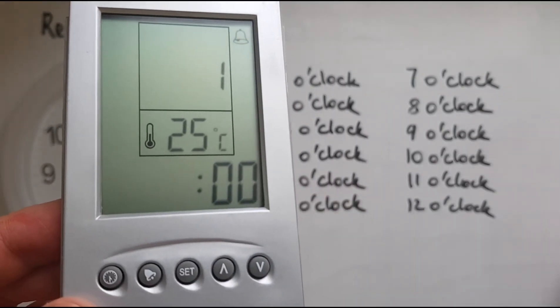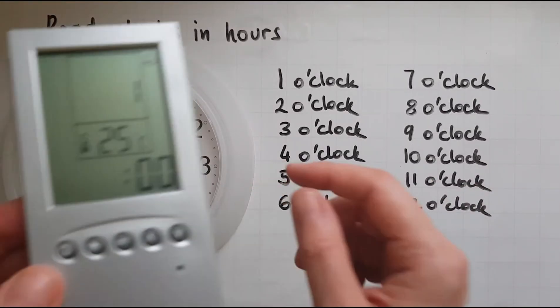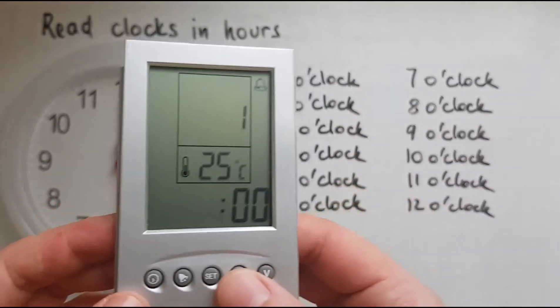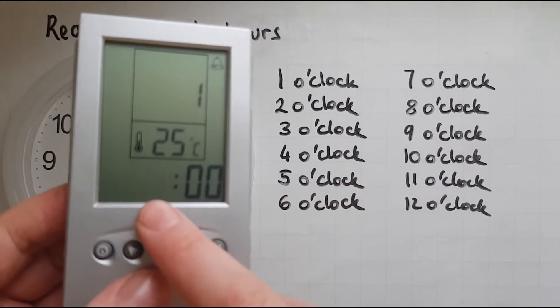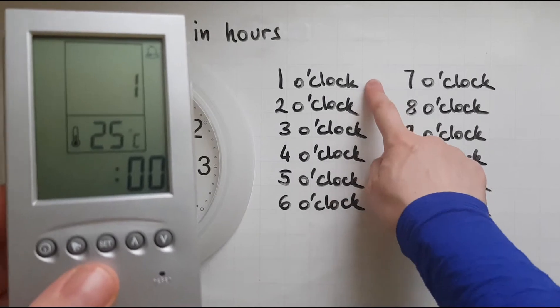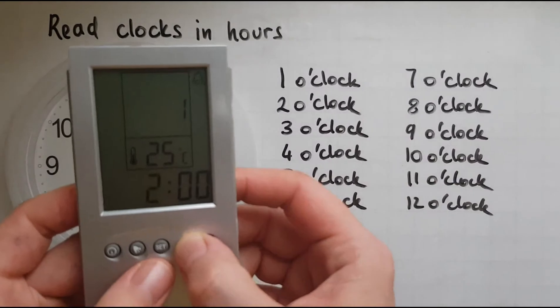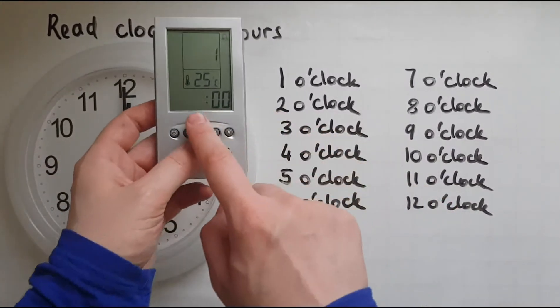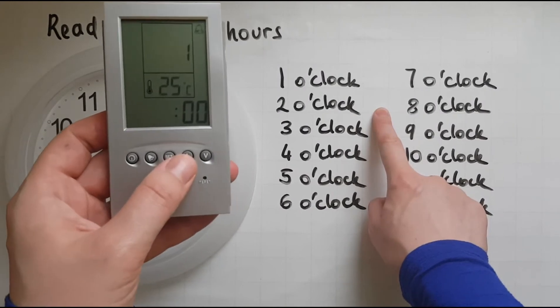This is called a digital clock. This one is an analog clock and this is a digital clock. I'm going to show one o'clock. At the moment you can see one o'clock. Now two o'clock, then three o'clock.